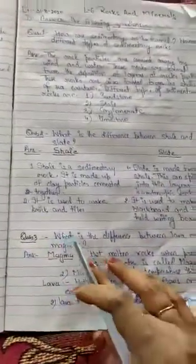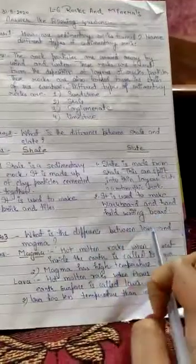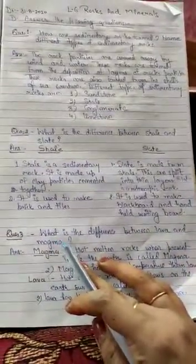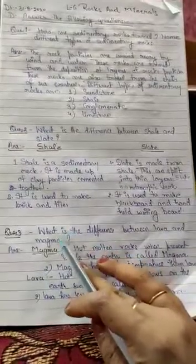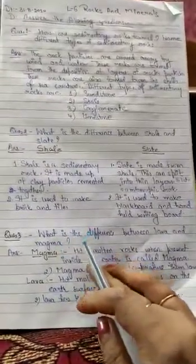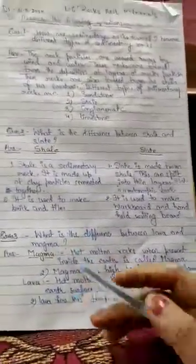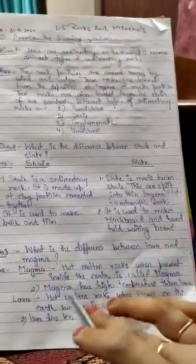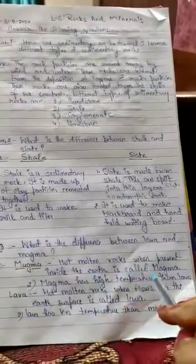Question number 3. What is the difference between lava and magma? I hope you remember. I have explained it very clearly. But I will explain it here again. Magma: hot molten rocks when present inside the earth is called magma.